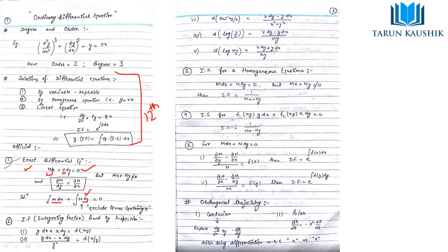Integrating factor by inspection involves differentiation of expressions in x and y using the u·v product formula. Formulas like tan⁻¹(y/x), log(y/x), and log(x·y) are useful when solving these questions.